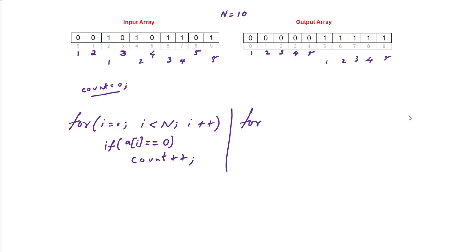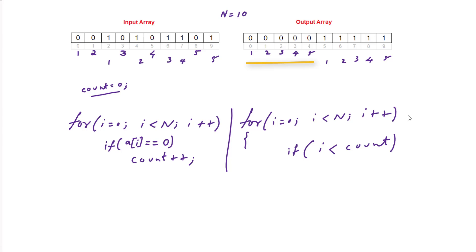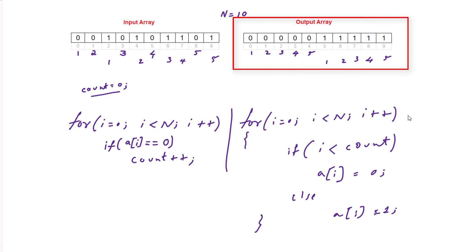The next step is to rearrange the array a[n] itself. Iterate through it with a for loop — initialize i to 0, iterate until i is less than n, increment i by 1. If index i is less than count (the number of zeros, which is 5 in this case, meaning indices 0 to 4), fill those elements with zeros. Else, if i is greater than or equal to count, fill those elements with 1. We already know there are 5 zeros and the rest should be 1.